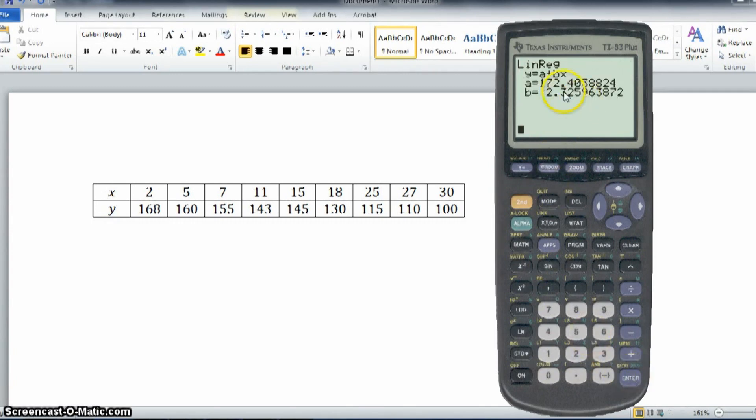You can see what comes up is the value of a and the value of b that we require. So, 172.4 for a, and b is minus 2.326, to three decimal places.